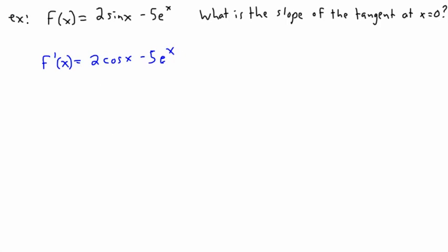Now this is the derivative of this graph at any point. At any x value, this is the derivative. In other words, this is the slope of the tangent at any point. But we want to evaluate it at x equals 0. So that means all we have to do is say f prime of 0 and replace all the x's with 0s. So 2 times cos of 0 minus 5 times e to the 0.